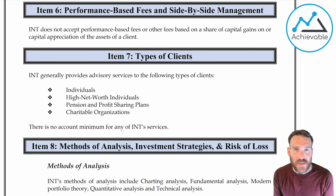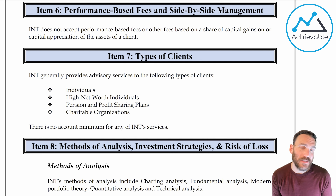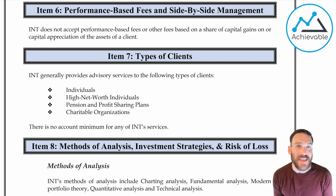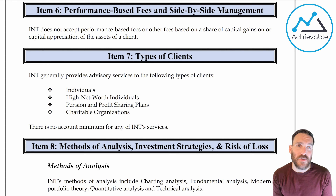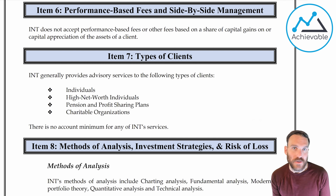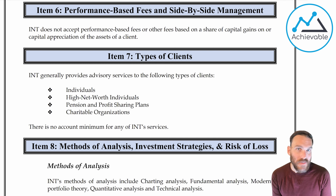Item 6 covers performance-based fees, which are basically fees where the advisor collects part of the gains they make for you. For example, if they recommend a stock that you make $10,000 on and they keep $2,000 of that profit, that would be a performance-based fee. You'll learn more about this fee structure later — clients typically have to have a certain amount of money before they're eligible. It doesn't matter here, though: Intelligent Investing does not charge this type of fee.